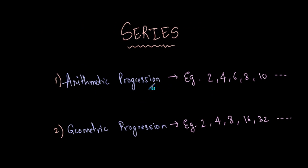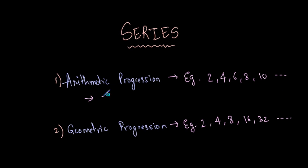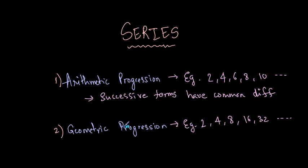There are basically two types of series or sequence. One is arithmetic progression and another is geometric progression. An arithmetic progression is a series where any two successive terms have a common difference, and a geometric progression is a series where successive terms have a common ratio.